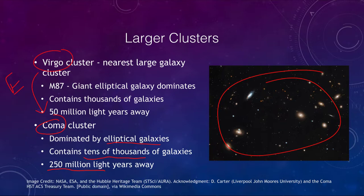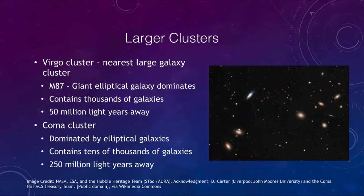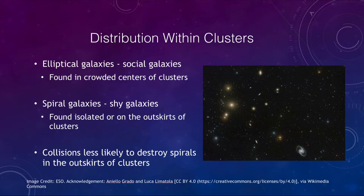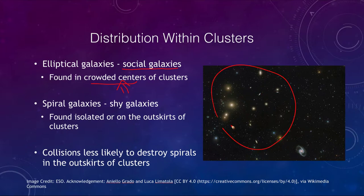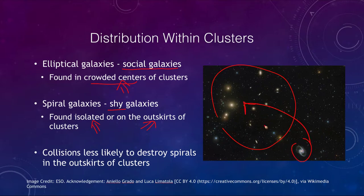Looking at how galaxies are distributed within clusters is very important for understanding galaxy evolution. We see social galaxies and shy galaxies. Social galaxies are the elliptical galaxies, found in the crowded centers of clusters. Spiral galaxies are the shy ones — they are found isolated on the outskirts of clusters, or in much smaller clusters like our own local group. Spiral galaxies do not like to be in these big groups.